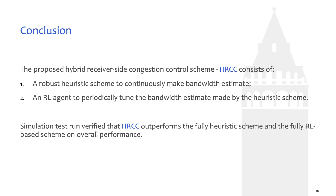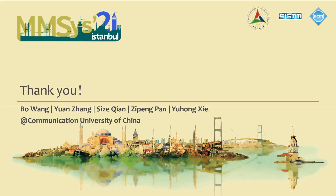As a summary, HRCC consists of a robust heuristic scheme to continuously make bandwidth estimates, and an RL agent to periodically tune the bandwidth estimate made by the heuristic scheme. Simulation tests verified that HRCC outperforms both of its individual components, and achieved second place in the Multimedia Systems 2021 Grand Challenge on bandwidth estimation for real-time communications. Thank you for listening.